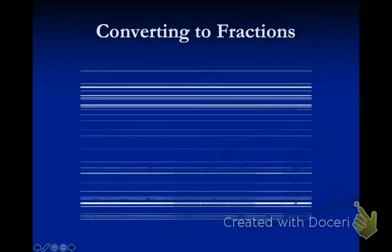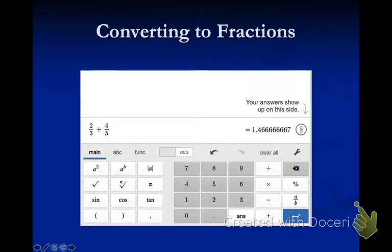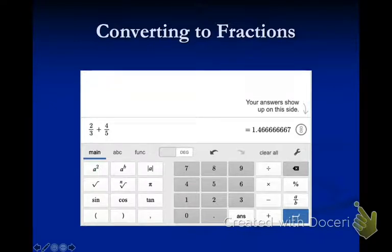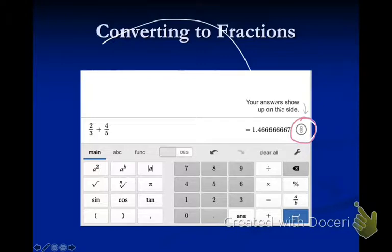One really quick thing I want to show you that is really cool. If you are struggling with multiplying fractions, it's still good practice to try, but if you go to your Desmos calculator — which you should use today — if you're multiplying two fractions together and you get a decimal answer, if you click this button, it'll turn it immediately to a fraction in the simplest form, which is really nice. I did not know it did that, so I suggest you use that.